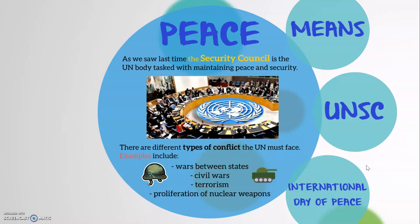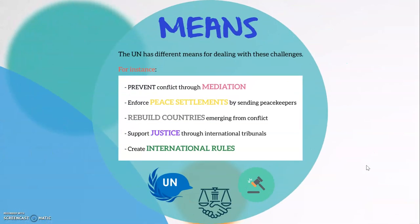So how does the United Nations try to secure and maintain international peace? Well, there are different types of conflict and security challenges that the UN must face. For example: wars between states, civil wars, terrorism, the proliferation of nuclear weapons, and so on. The UN has different means for dealing with these challenges.